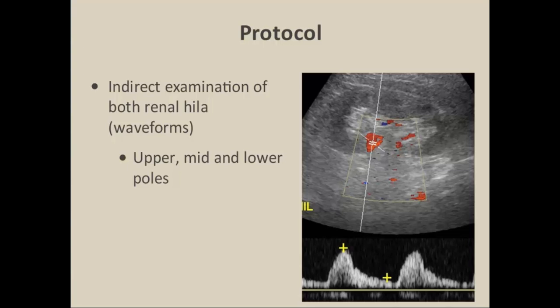The reason we take multiple samples from within the kidney is because you may have duplicated arteries that you don't see on the direct exam, or you may have stenosis of the segmental branches that can be picked up on the indirect exam.